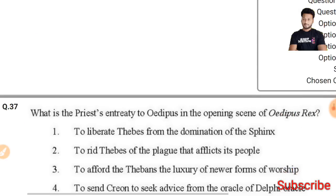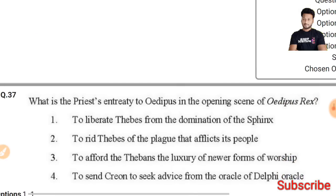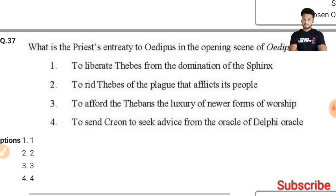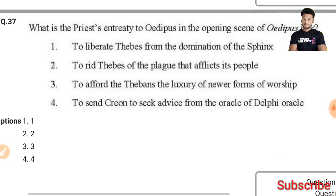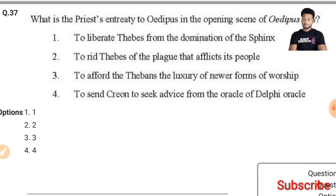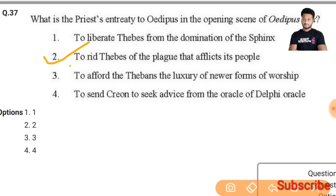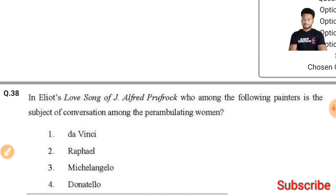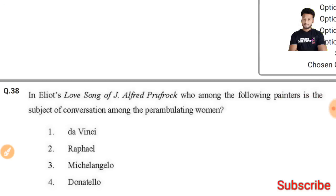Question 37: What is the priest's entry to Oedipus in the opening scene of 'Oedipus Rex'? The right answer is to rid Thebes of the plague that afflicts its people.